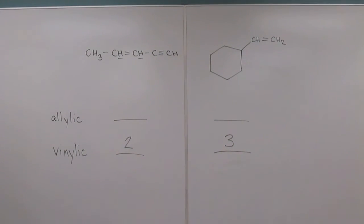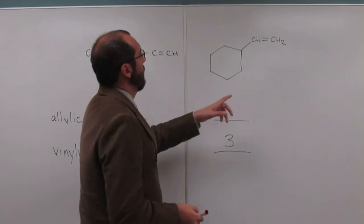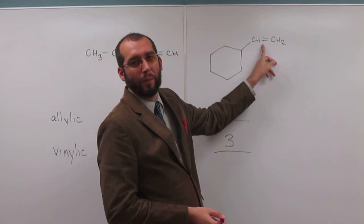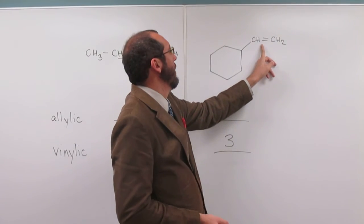So the allylic hydrogens are attached to the alpha carbon, right? So where is the alpha carbon located with respect to the double bond? One away. Just one away, right? So remember, again, we're looking only at the double bond. So when we look at the, we'll do this one because it looks a little bit easier, right? Look at the double bond.